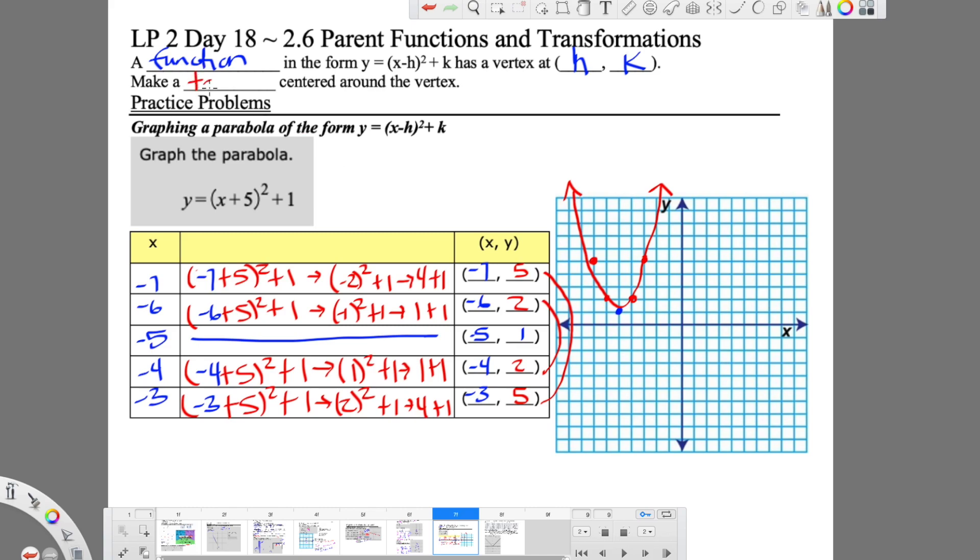We're going to make a table, center around the vertex. So that's exactly what we did. I just forgot to fill in the word table. So here we have our parabola in the form of y equals (x minus h) squared plus k. All right, so I hope that helped, and I will see you in the next video.